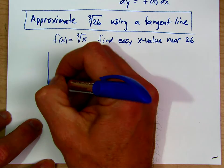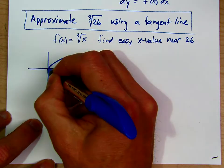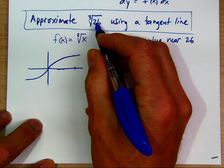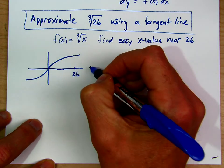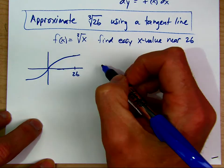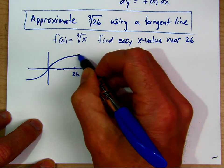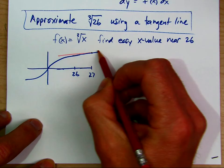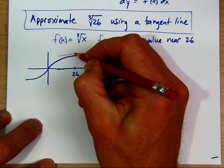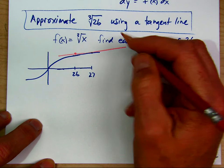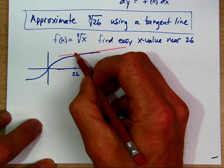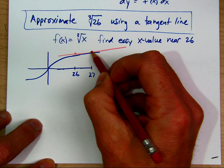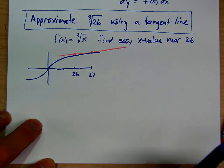Looking at the graph of the cubed root, we're trying to find the y value of the function at 26. We're going to look at 27 and make a tangent line there, then look for the y value of the tangent line at 26. We're going to say that the y value of the tangent line is close to the y value of the function at 26. So most of our work is done dealing with 27, and at the end we'll use 26.